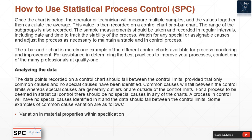Analyzing the data: Data points recorded on a control chart should fall between the control limits, provided that only common causes and no special causes have been identified. Common causes will fall between the control limits, whereas special causes are generally outliers or fall outside the control limits. For a process to be deemed in statistical control, there should be no special causes in any of the charts, and all data should fall between the control limits.